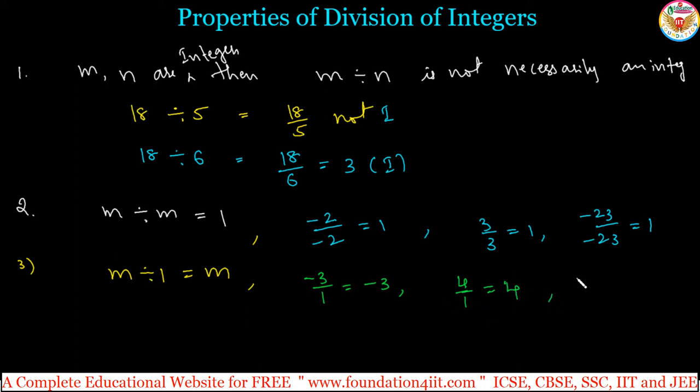Same we are getting, right? Minus 2 divided by 1 is minus 2. m divided by 1 equals m because m is non-zero. So, maybe negative or positive we will get the same.